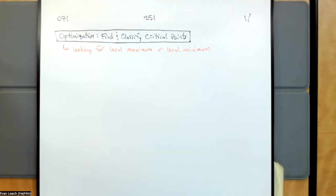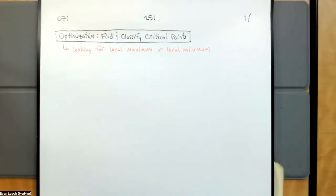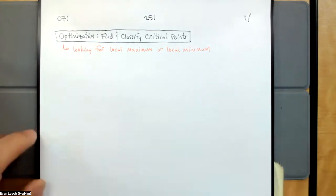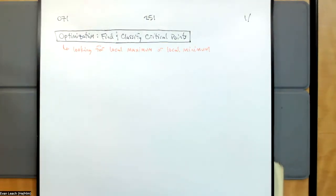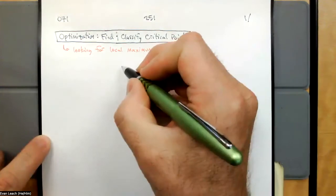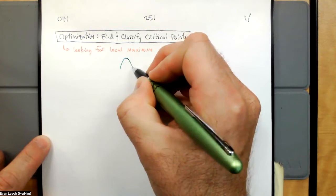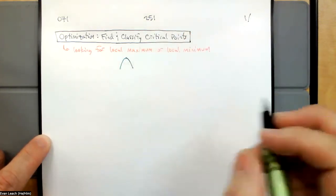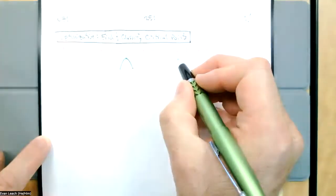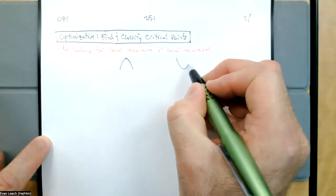Today we're going to look at another aspect of the first derivative, and that's going to come in the category of optimization. What we're looking for are points referred to as a local maximum or a local minimum. A local maximum is where a function is changing direction from increasing to decreasing. A local minimum is a point where a function is changing from decreasing to increasing.